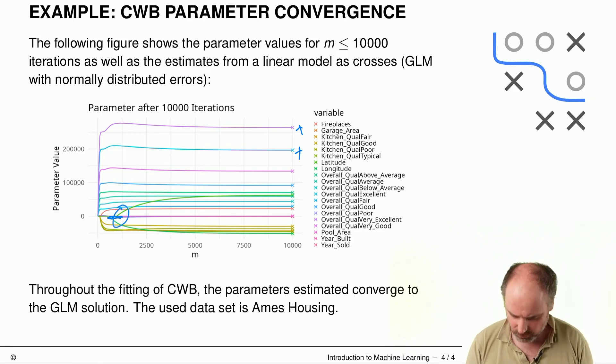If we would stop the model somewhere here or if we would stop the boosting iterations here, some of these parameters would still be left out. You can early stop and create a sparser model.